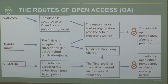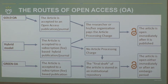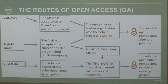Here are the roads of open access — many of you may have seen this picture. There is gold open access, where the article is accepted to an open access journal and the researcher's organization pays the article processing charge, and the article is immediately open after publishing. Then there is green open access, where the article is accepted to a subscription-based publication, and the author accepted manuscript is stored in an institutional digital repository. The article is open either immediately in the best cases, or after the set embargo period.